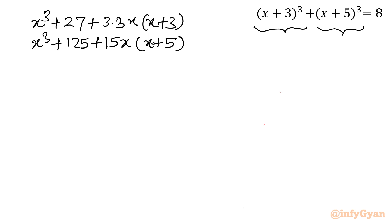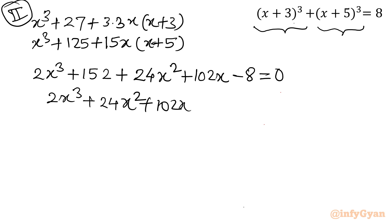So now we have to add, put that value equal to 8. So it will give us 2x cube, 125 plus 27 is 152, plus 9x square plus 15x square is 24x square. Then we are having 27x plus 75x is 102x minus 8. So this is our second approach. 2x cube plus 24x square plus 102x plus 144 equal to 0.